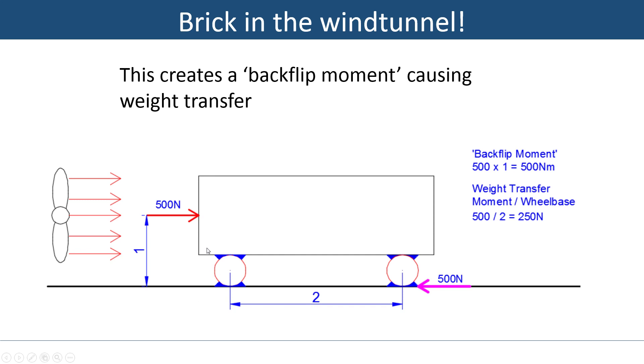Let's just add some fictive values here. Let's say we have 500 newtons of drag applied one meter off the ground, and we have a two meter brick wheelbase. That means this 500 newtons is countered here at the floor, 500 newtons, giving us a backflip moment. You can kind of imagine that this force applying here and this force applying there, you get a sort of moment that way.